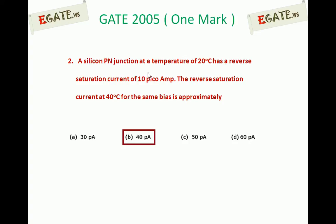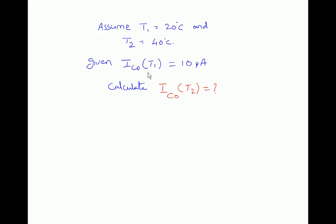Reverse saturation current is mainly due to minority carriers, and minority carriers are only a function of temperature. When temperature increases, minority carriers increase. As temperature increases, more and more covalent bonds will break, and more and more electron-hole pairs will be created.